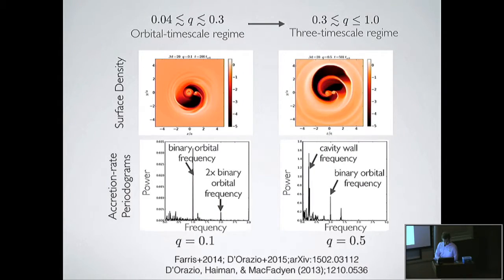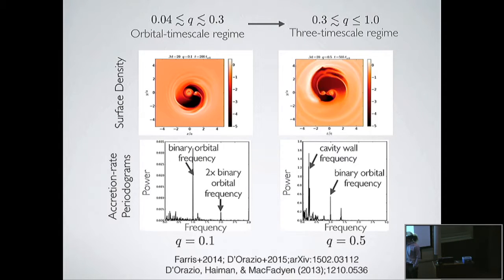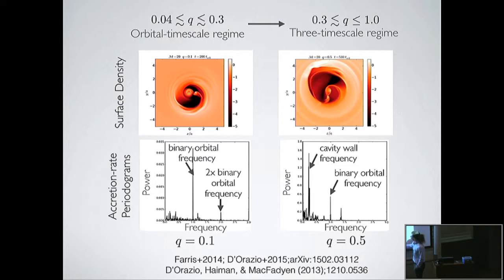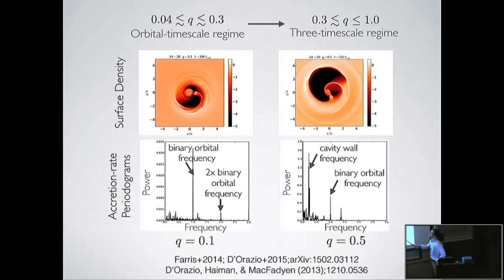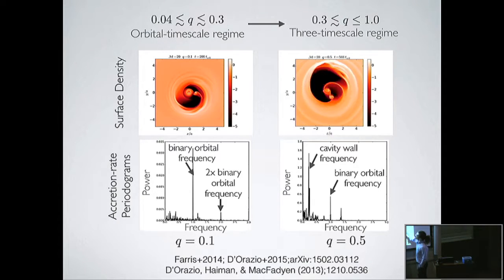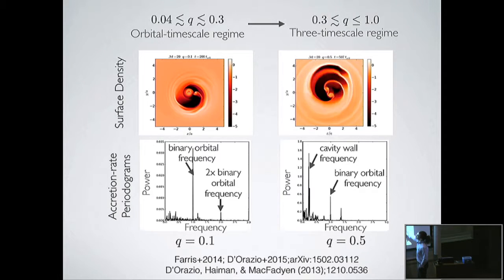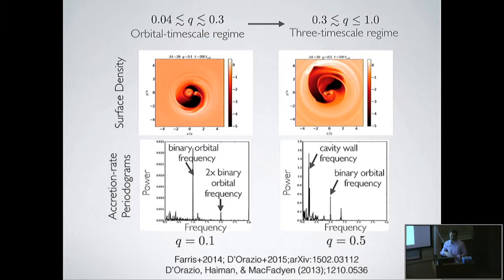In the third regime, at more equal mass ratios, you go from simply having the binary orbital frequency and its harmonic—two times the orbital frequency, because each black hole pulls in a stream—to having a similar scenario plus a larger, more powerful, longer-timescale periodic component. This has to do with another change in accretion behavior where you create elongated, lopsided cavities. The streams create an overdense lump that orbits around, and every time the lump orbits at the cavity wall there is an increase in accretion rate due to a larger feeding rate, modulating at a longer period—sometimes 5 to 10 orbital periods.